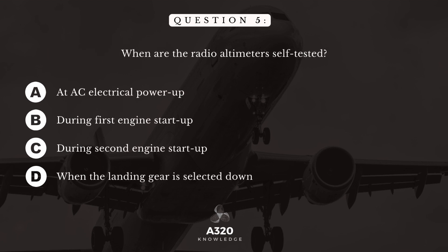Question 5. When are the radio altimeters self-tested? A. At AC electrical power-up. B. During first engine start-up. C. During second engine start-up. D. When the landing gear is selected down.